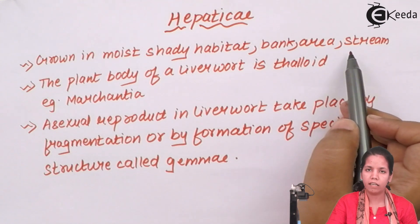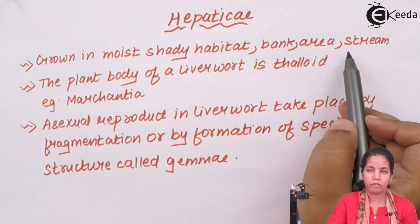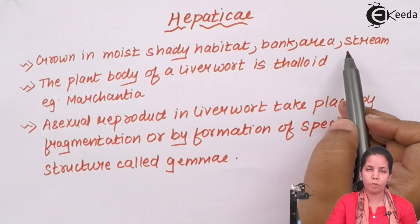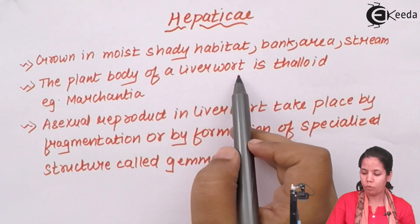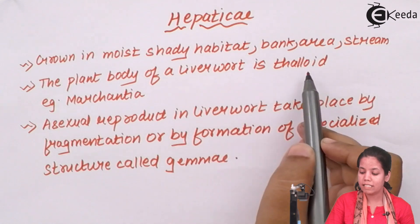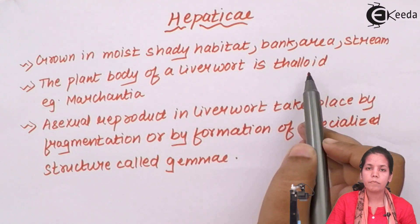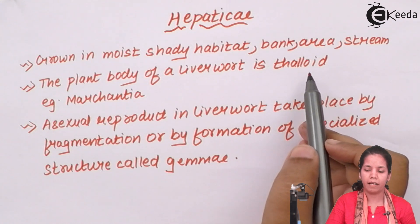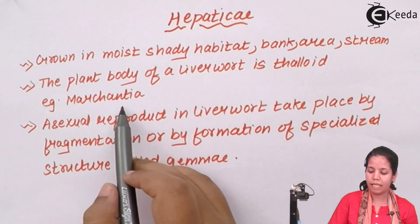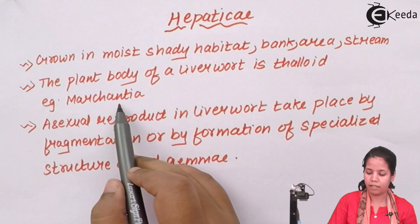The leaves of Hepaticae are really irregular and adaxial, and they are dorsiventral in nature. They spread around and cover, forming green patches wherever they are present. The plant body of Liverwort or Hepaticae is thaloid in nature — it spreads apart and forms a coronary feature in the plant spreading. An example of this could be Marchantia.